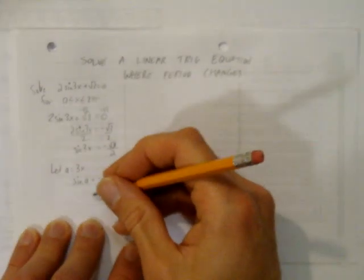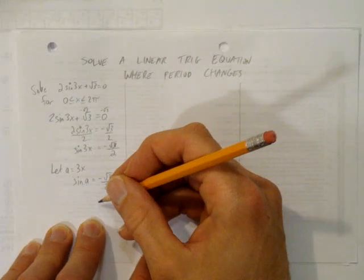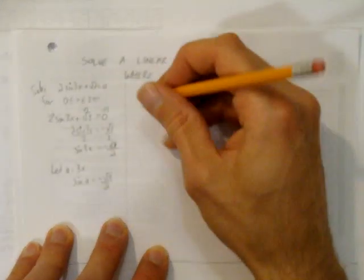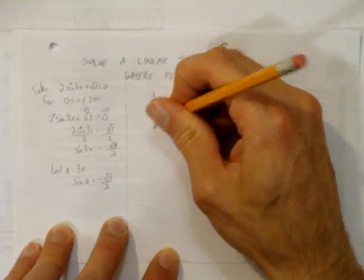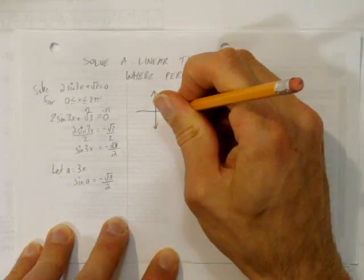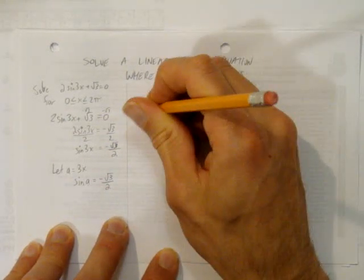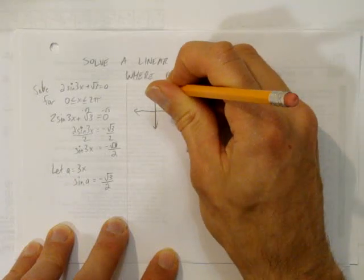A more familiar question that we know how to solve. And the way we solve that is by drawing a sketch. We want to solve where sine of a is negative root 3 over 2. That's my sketch. There's my x and y.